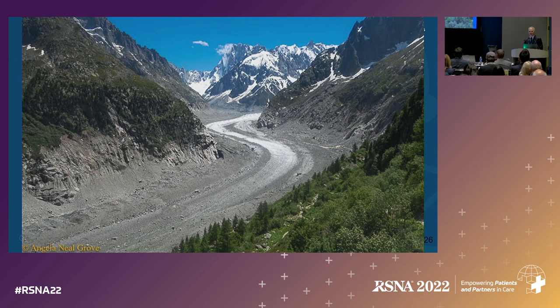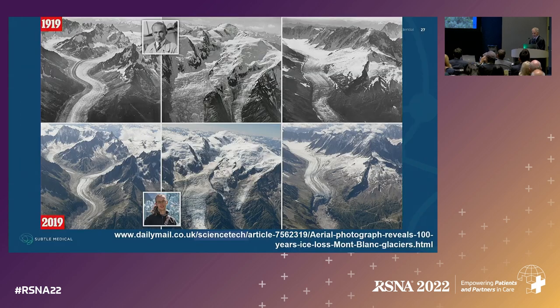This is the Mer de Glace glacier off of Mont Blanc — a very famous glacier. That's what it looks like today, and there are pictures of what it looked like in 1919, recreated today from the same vantage point.